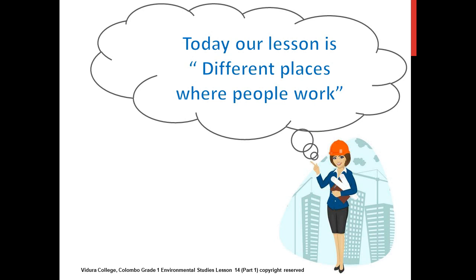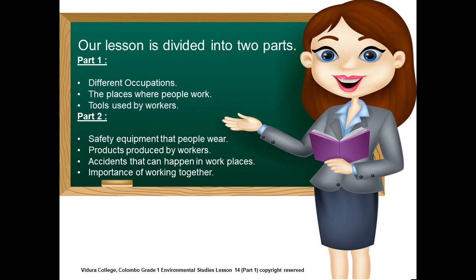Now we will see what we are learning today. Our lesson today is Different Places Where People Work, and our lesson is divided into two parts. In Part One, you will learn about different occupations, the places where people work, and tools used by workers. In Part Two, you will learn about safety equipment that people wear, products produced by workers, accidents that can happen in workplaces, and the importance of working together. In this lesson today, we are only learning about Part One.